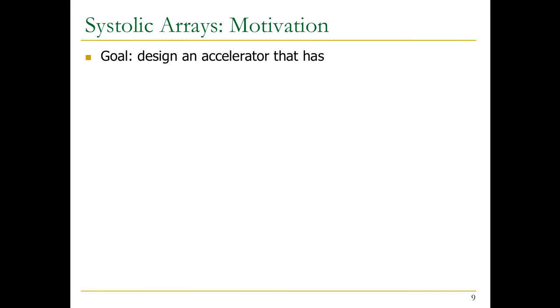Systolic arrays are really interesting because people talk about biologically inspired architectures. Neural networks is an example of a biologically inspired architecture—it's really designed based on how neurons behave, how the brain behaves. We have a model of how neurons behave, and based on that we've developed neural networks. The simplest neural network is a perceptron. People normally don't think of systolic arrays as motivated by biology, but if you read the original paper, it's perfectly motivated by biology.